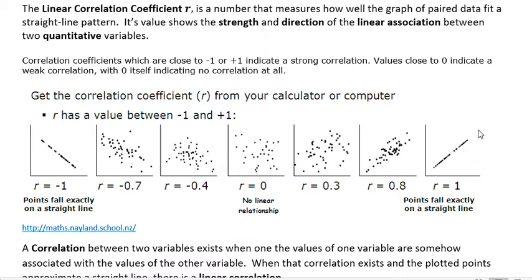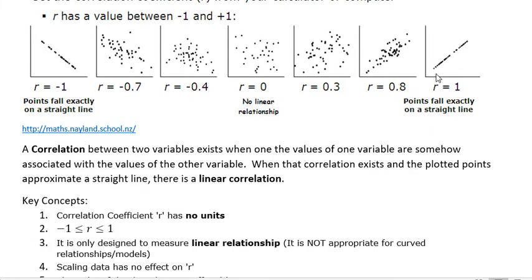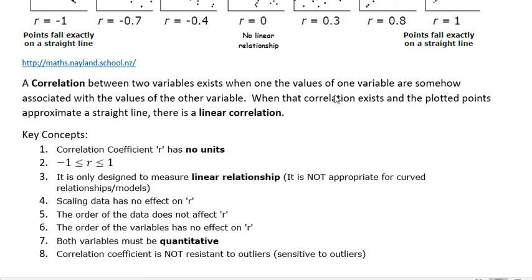If you're evaluating whether there's a correlation between two things, you look at how close they are to one or negative one to decide if there's a strong correlation. A correlation exists when the values of one variable are somehow associated with the values of the other variable. When that relationship makes a line, we have a linear correlation.